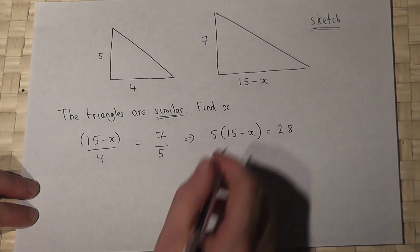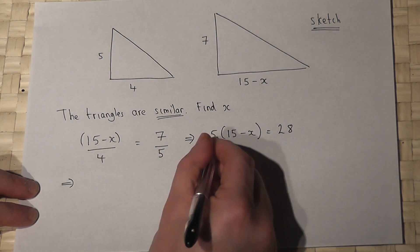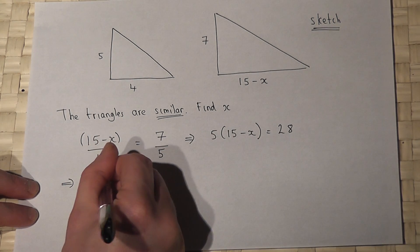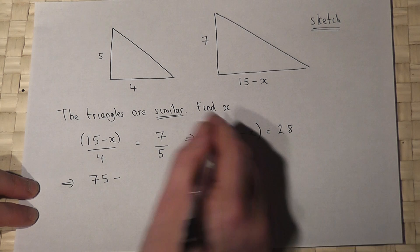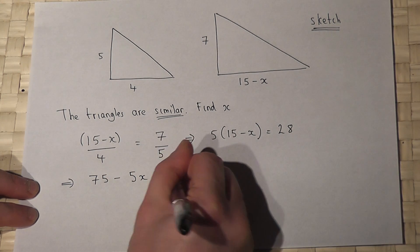So I then expand it. 5 times 15 is 75, take away 5x equals 28.